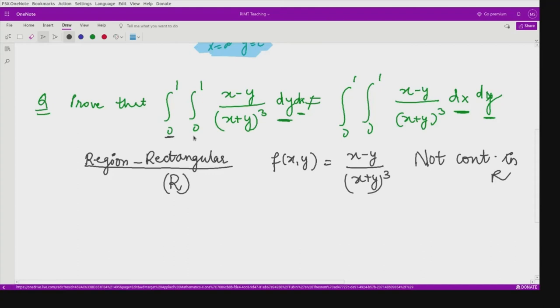When you substitute the point (0,0) here, the function is not defined. The denominator here becomes infinity. That is why this is not continuous here. So according to Fubini's result, they are not equal.